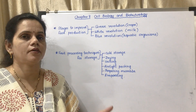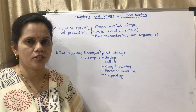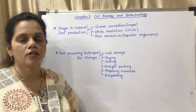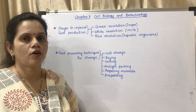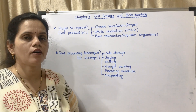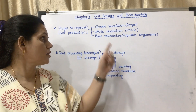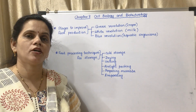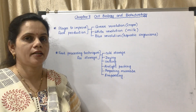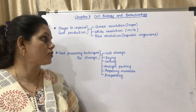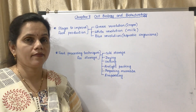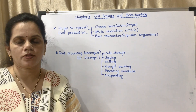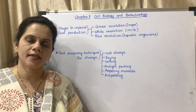There are different developmental stages and measures which are taken. First is the Green Revolution, which is for the improvement of crops. White Revolution is for development of milk and milk products, and Blue Revolution is for aquatic organisms.